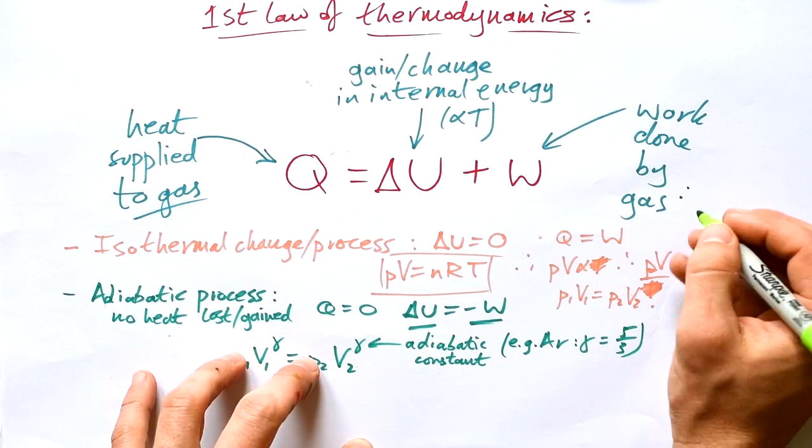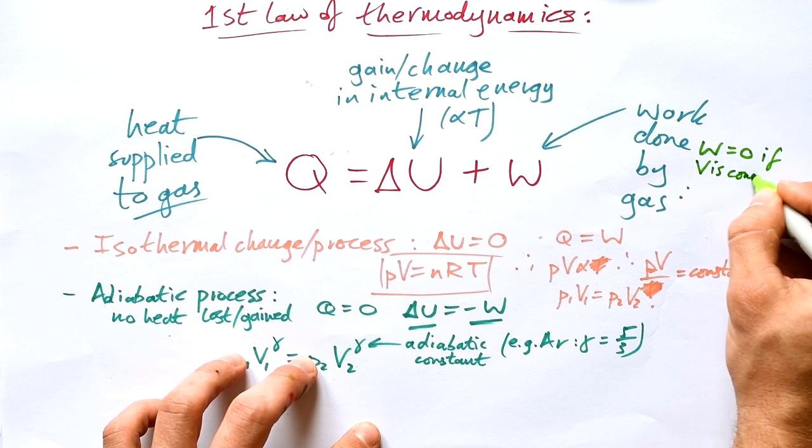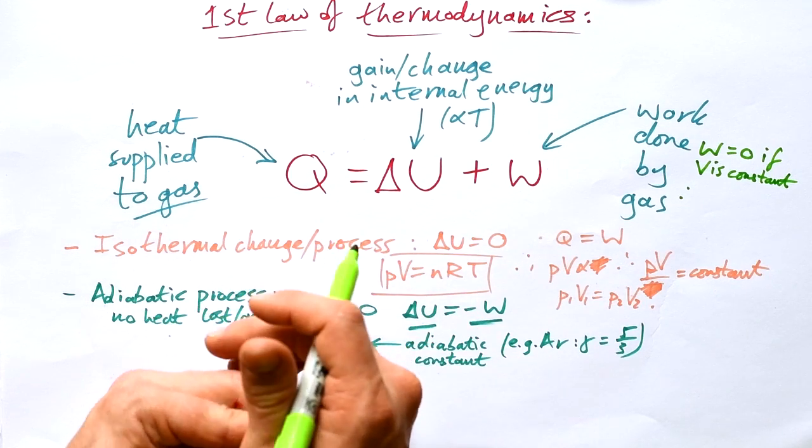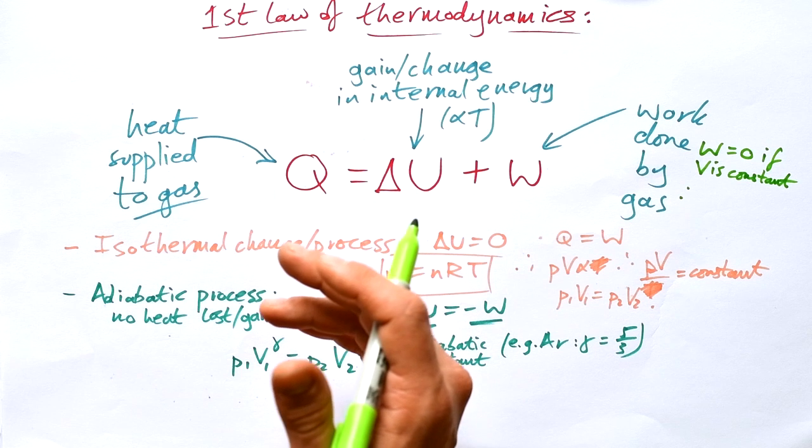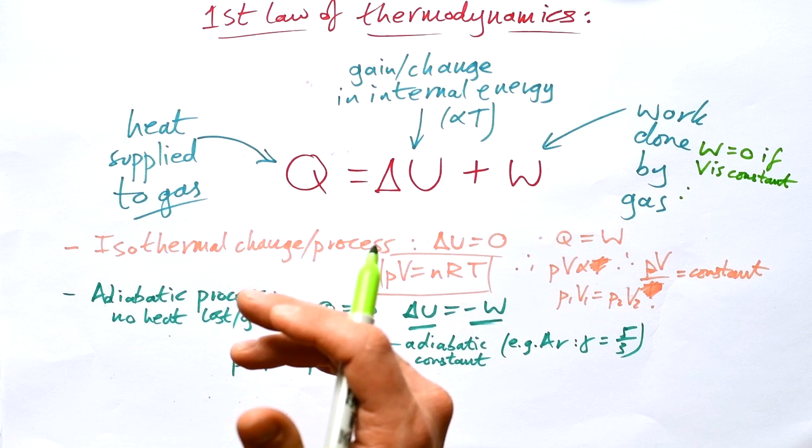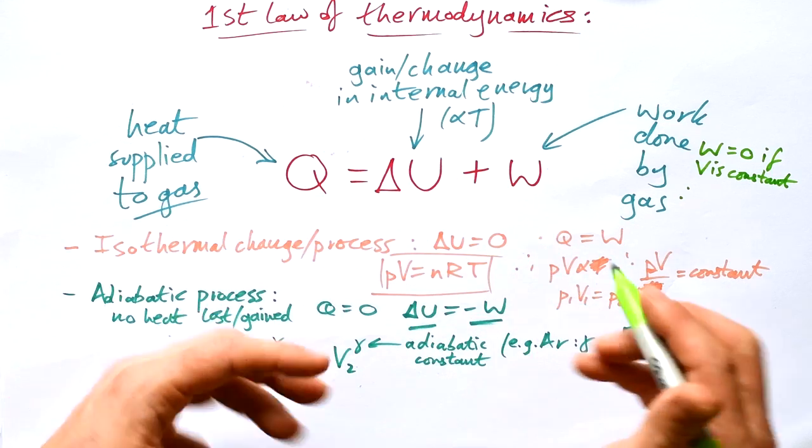I'm going to add one thing in here as well. Work done by a gas. This is equal to zero if V is constant. So if a volume of a gas is constant, then by definition it can't do any work. You think about it. Work done is force times distance. And so if a gas isn't expanding or contracting, then no work is being done on or by the gas.